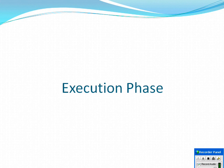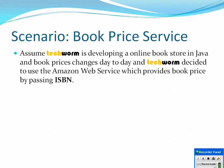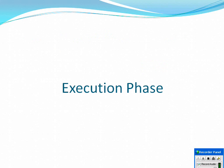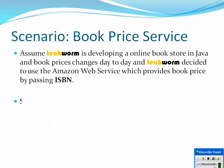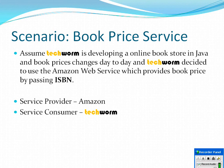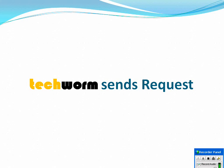Now we will see the execution phase. The scenario is: Techform is developing an online bookstore in Java. Book prices change day to day, and Techform decides to use the Amazon web service, which provides book prices by passing the ISBN number as a parameter. Amazon is the provider and Techform is the consumer. By now, both have infrastructure ready — Amazon has a skeleton and Techform has a stub.